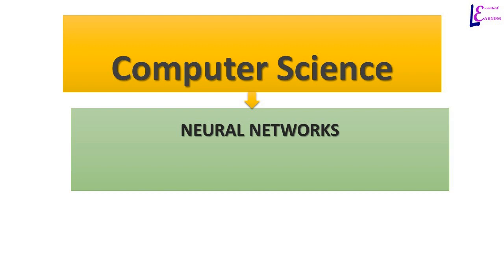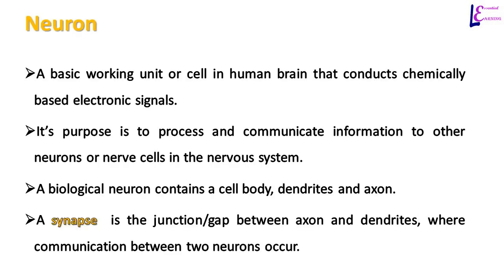Let us look at how neurons in the human brain work to better understand how artificial neural networks work. A neuron in the human brain is a basic working unit or cell that conducts chemically based electronic signals to pass messages or information from one cell to another cell of the brain.